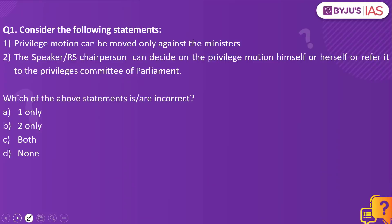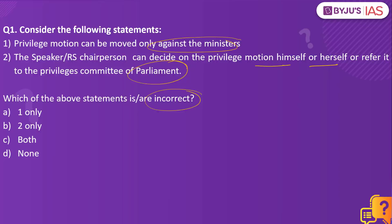Consider the following statements. Privilege motion can be moved only against the ministers. The speaker or the Rajya Sabha chairperson can decide on the privilege motion himself or herself, or refer it to the privileges committee of parliament. Which of the above statements is incorrect? The answer to this is one only.